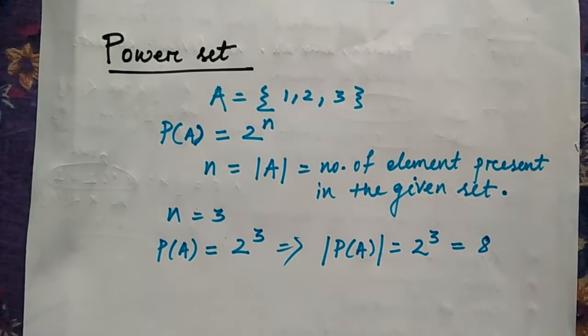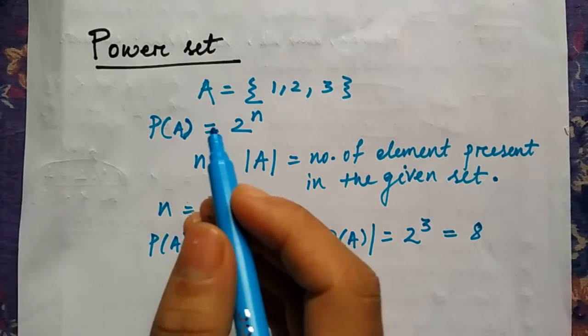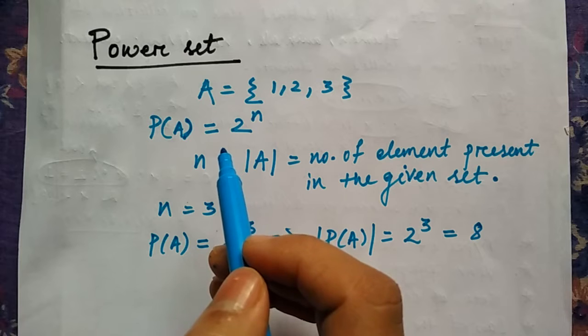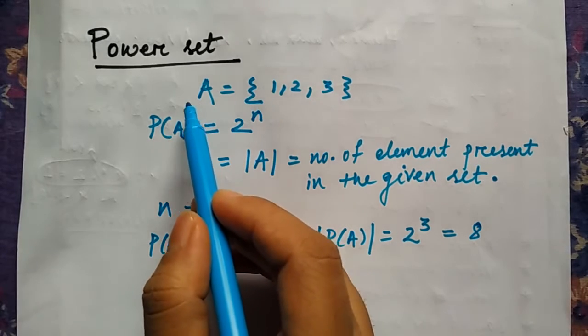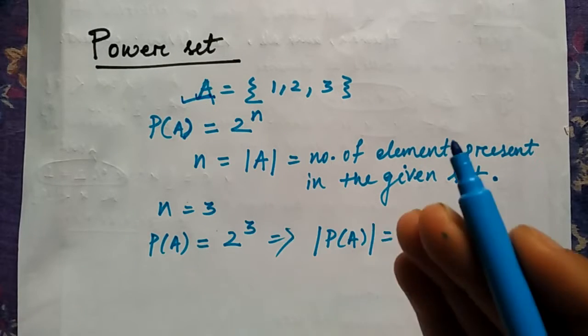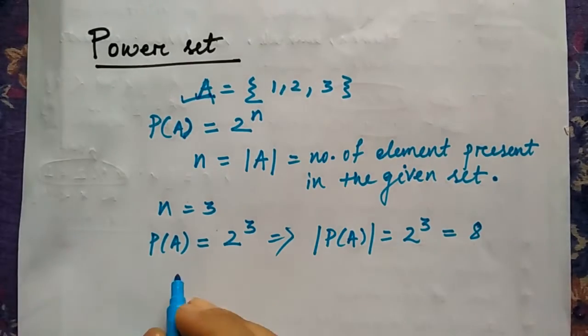So in the power set of A, you are going to have 8 elements. I told you the definition that power set is all possible sets which can be derived from the given set, or you can say the collection of all possible sets which can be derived from the given set.